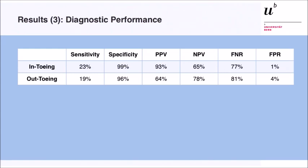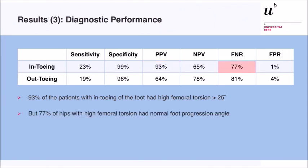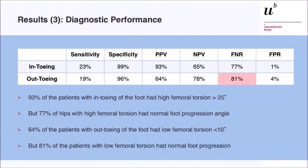Looking at the diagnostic performance of in-toeing and out-toeing to detect femoral antitorsion variations — focusing on positive and negative predictive values — if a patient has in-toeing of the foot, in 93% of those patients you will find high femoral torsion, so this does work. However, in 77% of hips with high torsion we found a normal foot progression angle. In contrast, only 64% of patients with out-toeing had low femoral torsion, so you would miss many. Only 81% of patients with low femoral torsion had normal foot progression.